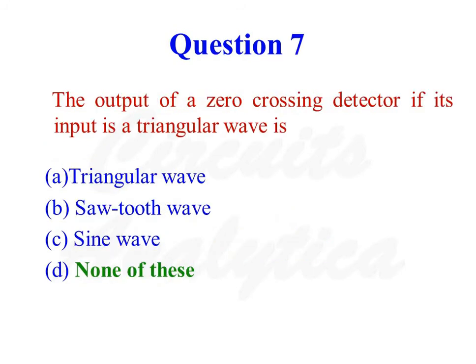The output voltage of a zero-crossing detector, if its input is a triangular wave, is a square wave — which is not given in any of the options. So the correct answer is none of these. A zero-crossing detector is a comparator where one of the inputs of the operational amplifier is connected to ground, and a signal is applied to the other input.